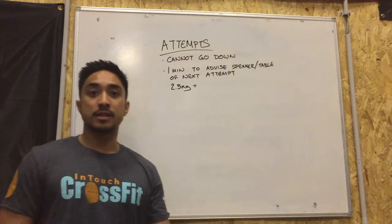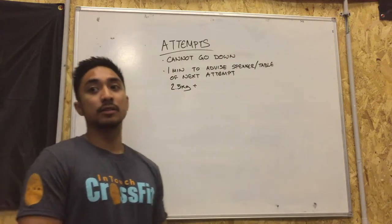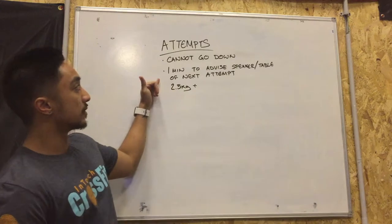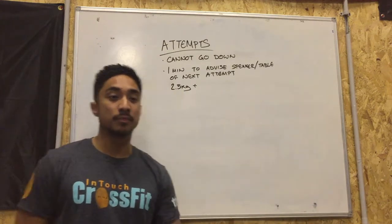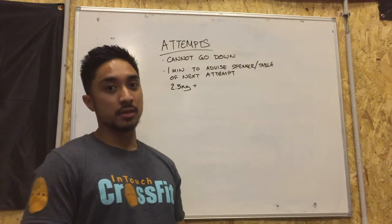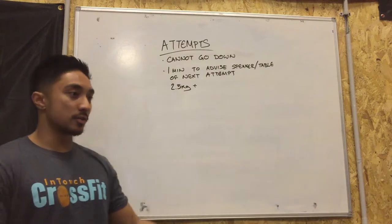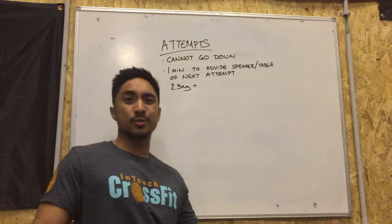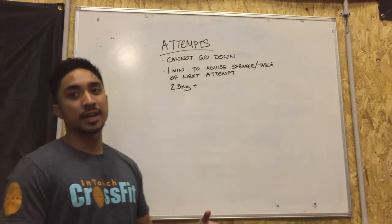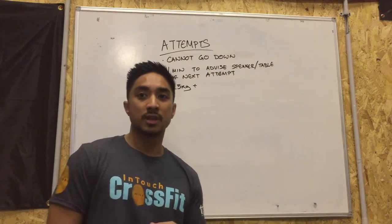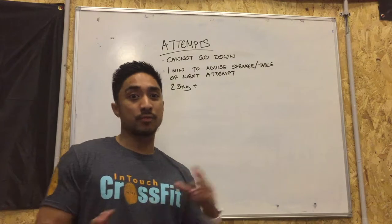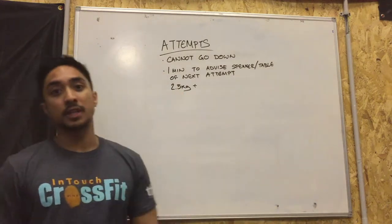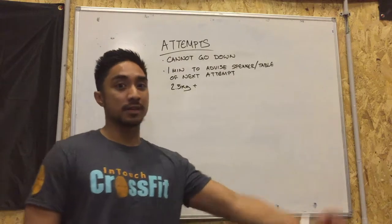After the lift is completed and it's successful, you have one minute to advise the speaker or the table team what your next attempt is going to be. If you don't do that and you just walk past them, taking too long, they will then add 2.5 kilos — though this varies from federation to federation — and that will be your next attempt.